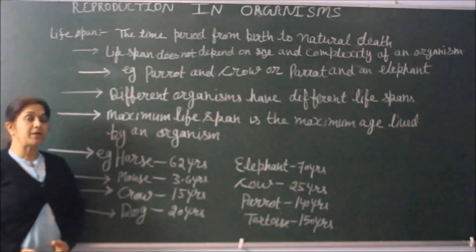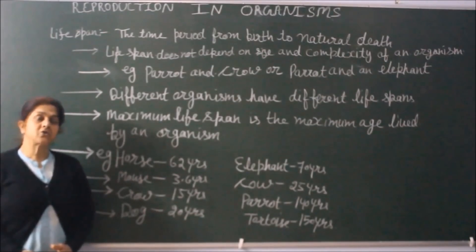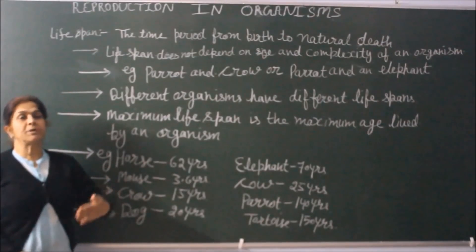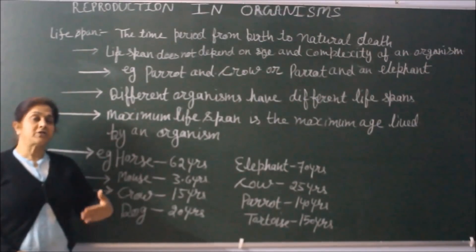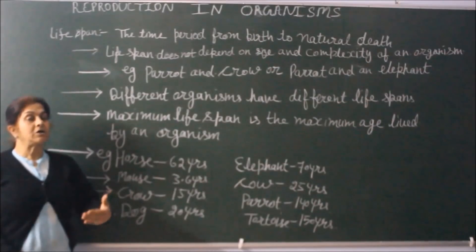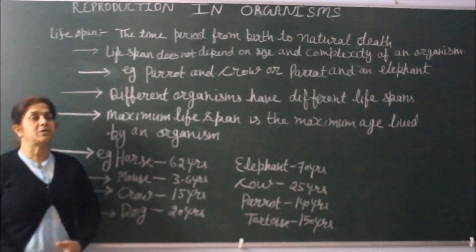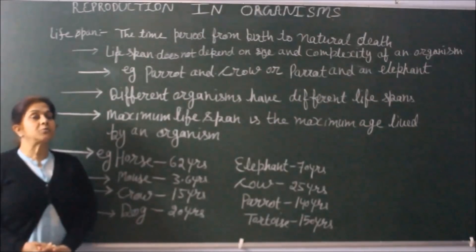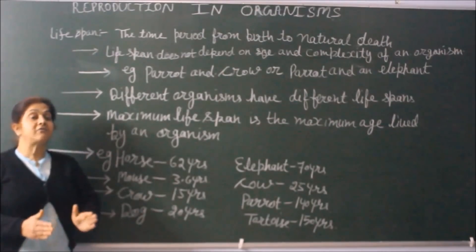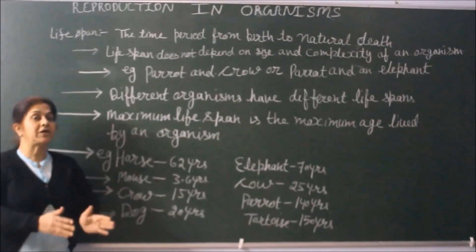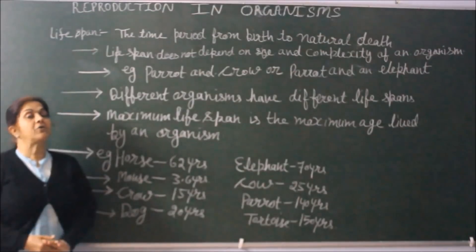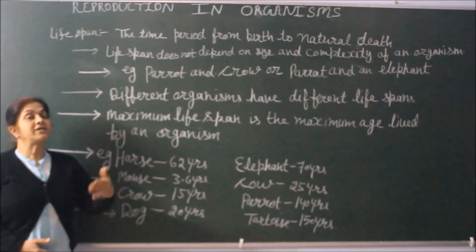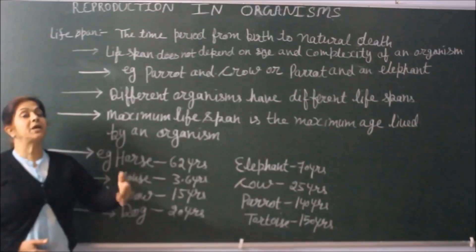Different topics include lifespan, various means of reproduction, and asexual reproduction in detail — what is binary fission, what is budding, what is regeneration, fragmentation, and various kinds of asexual reproduction in plants. After that we will come across sexual reproduction: pre-fertilization events, fertilization events, and post-fertilization events. Moreover, we will study various terminologies and definitions.